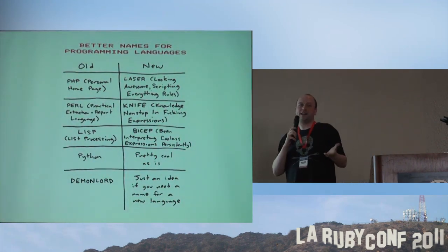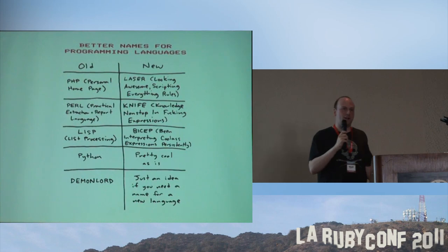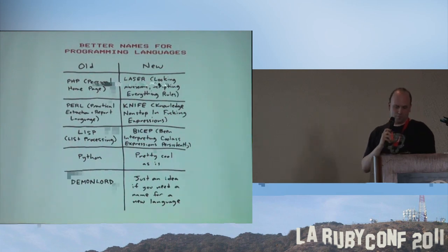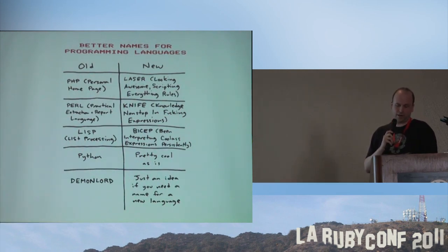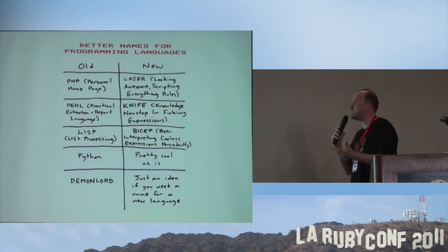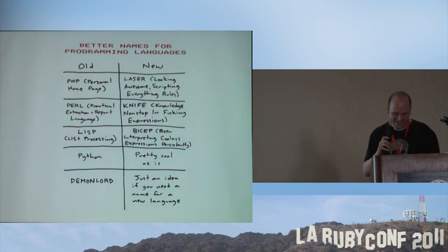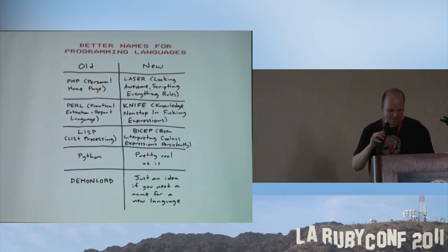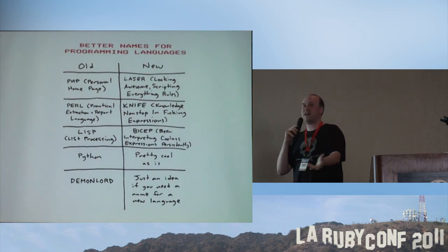On the subject of not sticking to old terminology — this is a revisionist approach to language naming: PHP, personal homepage, is replaced with LASER, Looking Awesome Scripting Everything Rules. Perl is replaced with KNIFE — Knowledge Non-stop In Fucking Expressions. Lisp is replaced with BICEP. Python is pretty cool when I say this. And Demon Lord is just an idea if you need a name for a new language.